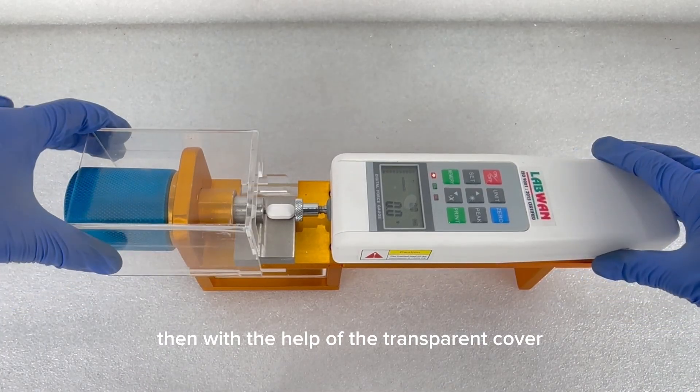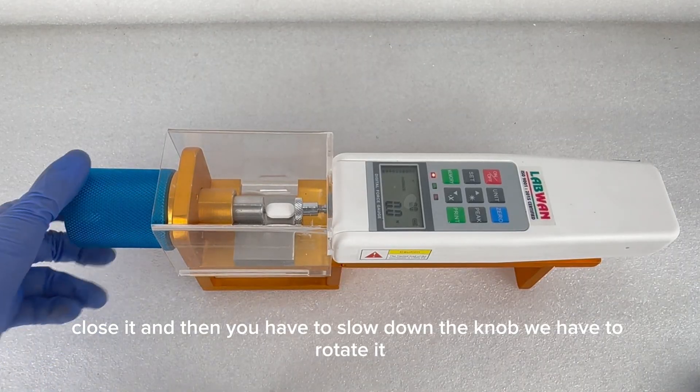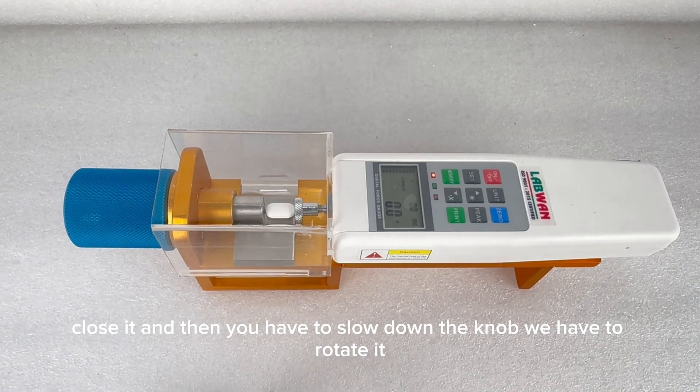Then, with the help of the transparent cover, close it. And then you have to slow down the knob. We have to rotate it.